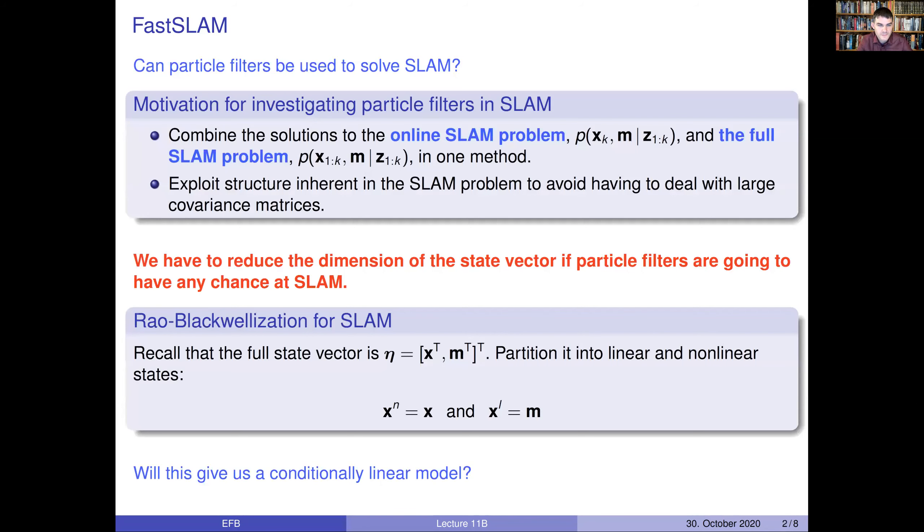So first, as motivation for why would we want to look at particle filters for solving SLAM. One reason is that we talk about both online SLAM and the full SLAM problem. We are going to see later that solving the full SLAM problem has advantages. In online SLAM, we only want to estimate the current position or pose of the robot and the map of landmarks. In the full SLAM problem, we want to estimate the full trajectory of the robot together with the map of landmarks.